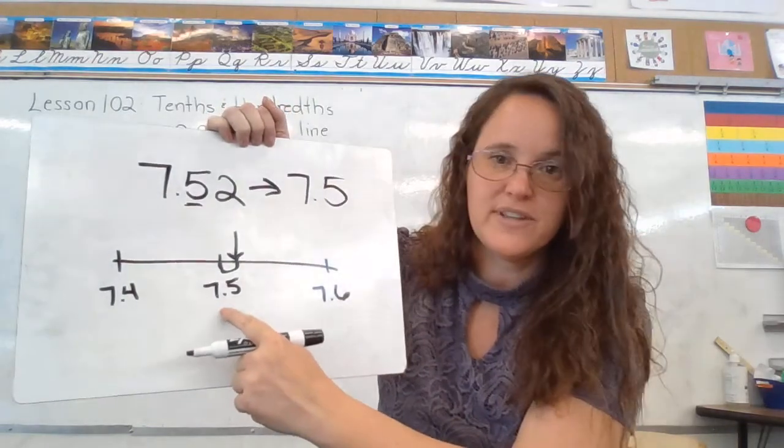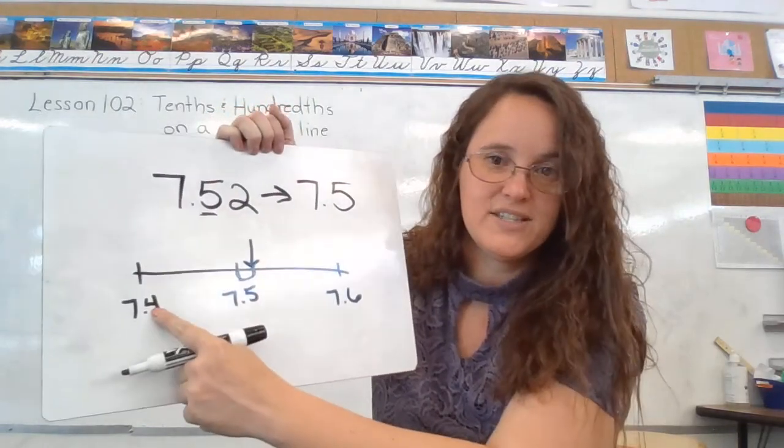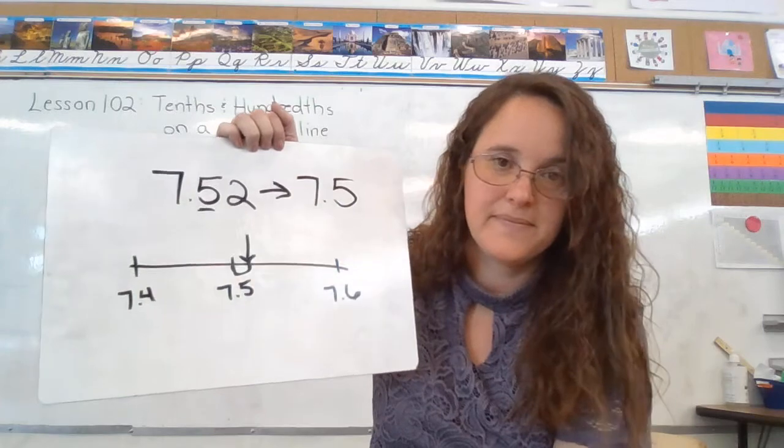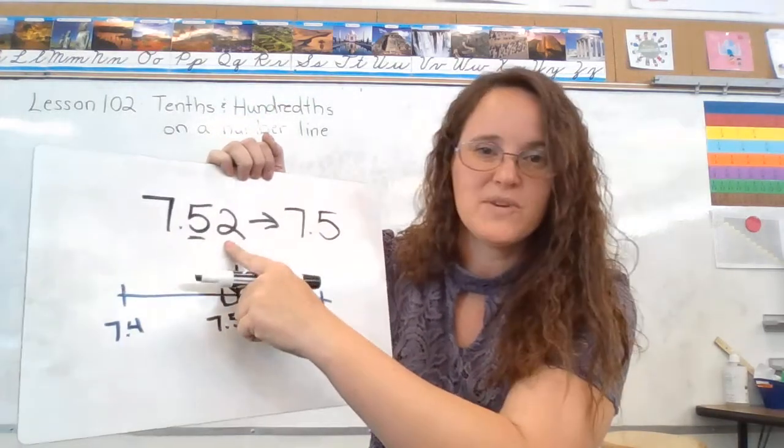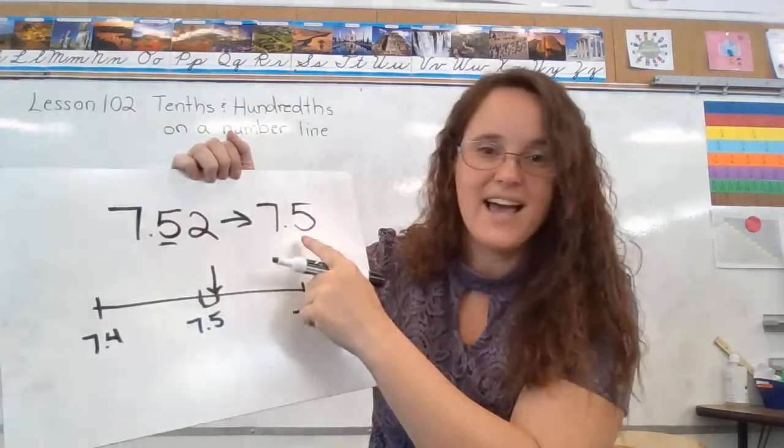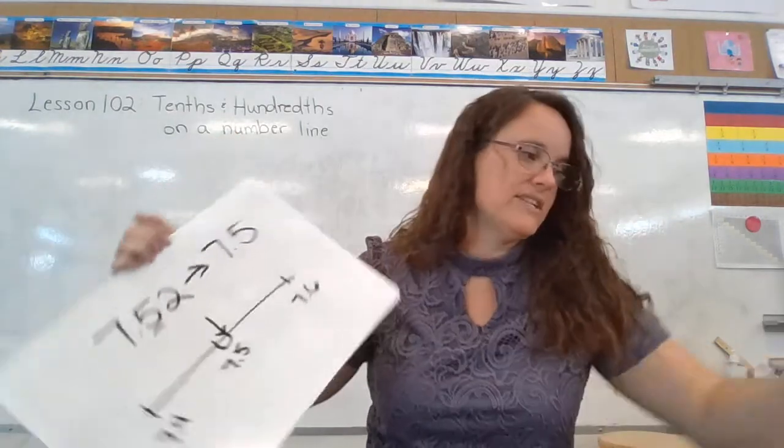because it's just this little itty-bitty space away from 7 and 5 tenths. It's much closer to this one than it is to this one. Rounding down just gets rid of that extra. It does not change the place that we're rounding to.